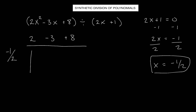First step, bring down this 2. Then we take 2 times negative 1 half: that's negative 1, so we write that in. Adding vertically, negative 3 and negative 1 give us negative 4. Then we take negative 4 times negative 1 half, which gives us positive 2. We write that in. Positive 8 and positive 2 give us positive 10. And that's kind of our halfway to the answer.